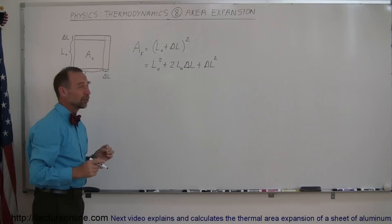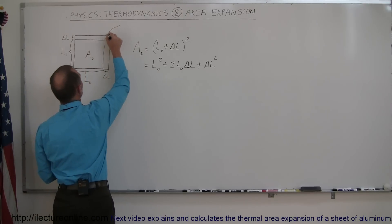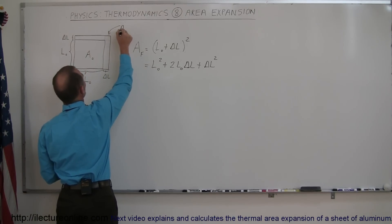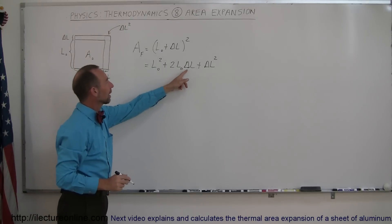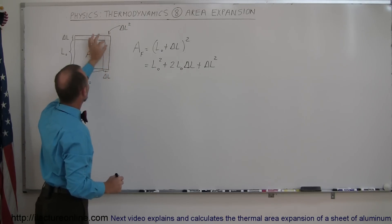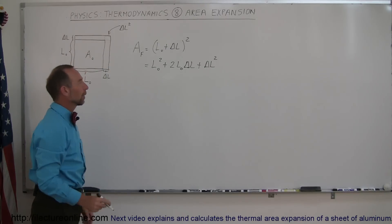Now, delta L squared is going to be a very small quantity. That's this little thing right here at the very edge. So this is the delta L squared. Notice the L sub nought times delta L, those are the two long stretches right here. And of course, your A sub nought is simply your L sub nought squared right there.